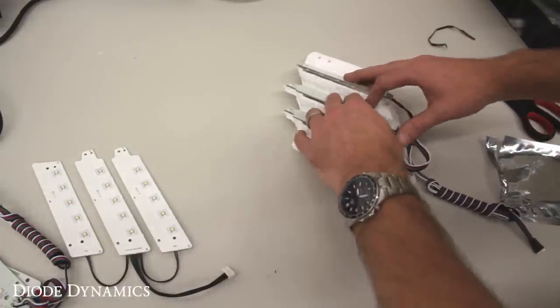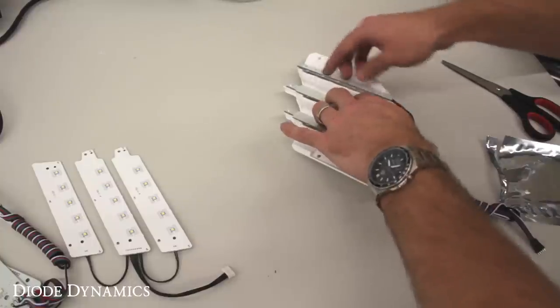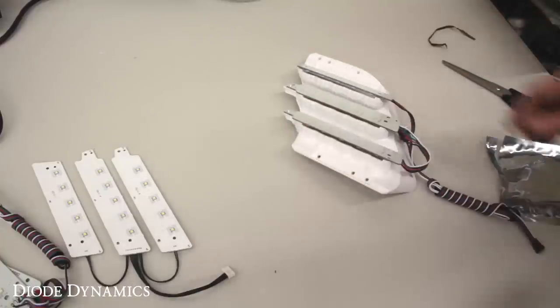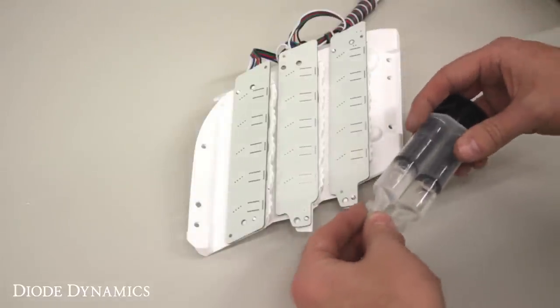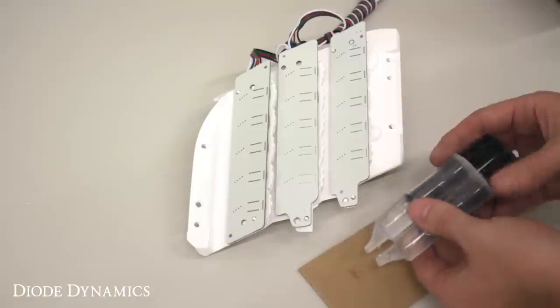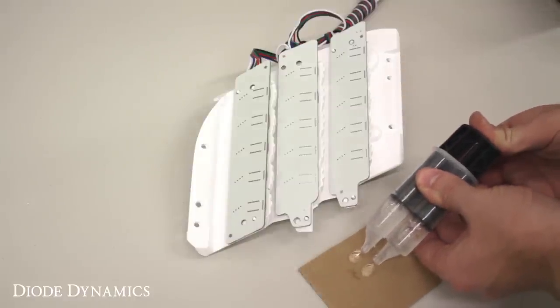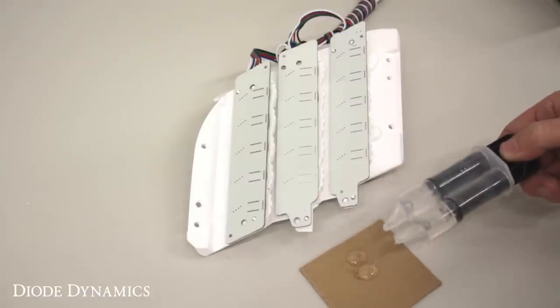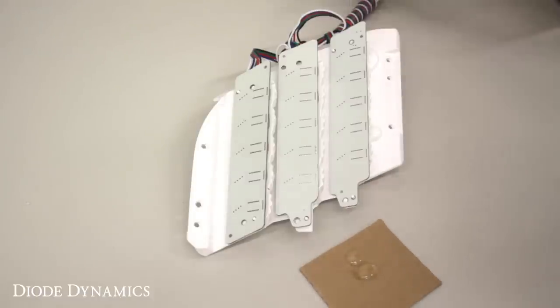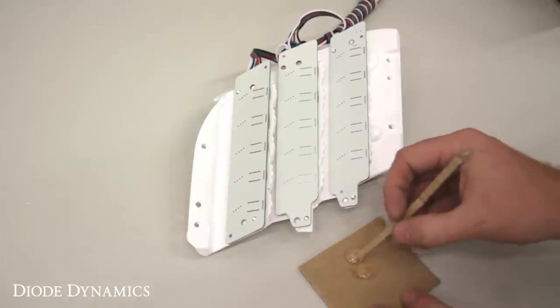So go ahead and get everything held in place and make sure it's all aligned. And then we're going to grab our epoxy. Again, we recommend a five minute epoxy, which is available at any hardware store. It's just very quick curing and very strong. You're not going to need too much. Just squeeze out a little bit. If you have a two part, make sure to mix it up thoroughly with either the stirring tool included or anything you've got.